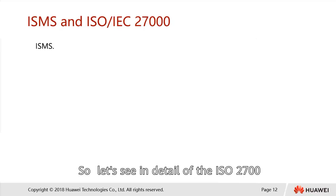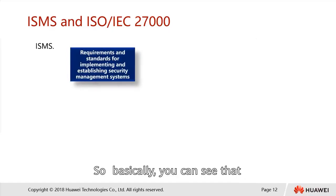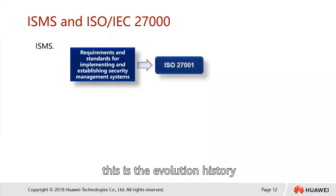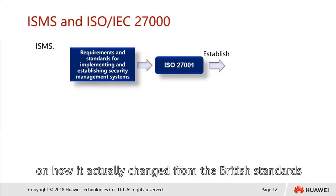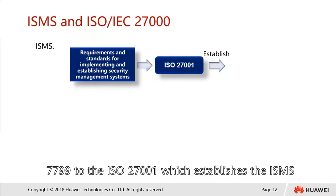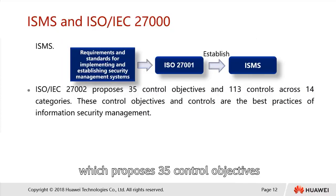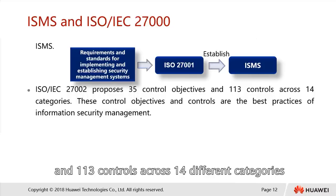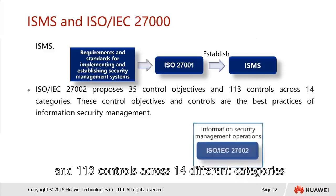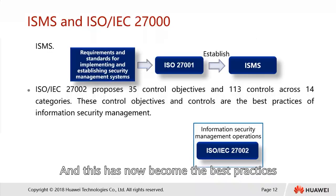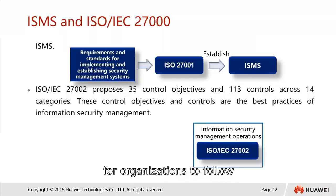Looking at the evolution history in detail, from British Standards 7799, it became ISO 27001, which established the ISMS framework. ISO 27002 proposes 35 control objectives and 113 controls across 14 different categories. This has now become best practice for organizations to follow.